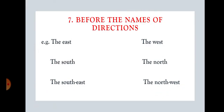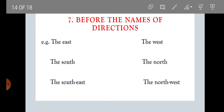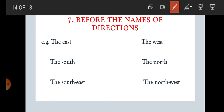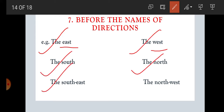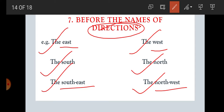Rule number seven: before the names of directions. We all know there are four main directions and four sub-directions. Before the names of directions, we use 'the.' For example: the east, the west, the south, the north, the south-east, the south-west, the north-west. These are the sub-directions and four main directions. Whenever we are writing any direction, we have to write 'the' before the direction.